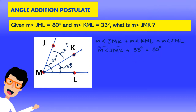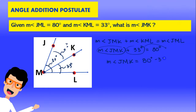So if we want to find JMK, we isolate it by subtracting to the other side. The measurement of angle JMK equals 80 degrees minus 33 degrees, by the angle addition postulate. So the measurement of angle JMK is 47 degrees, and that is our answer.